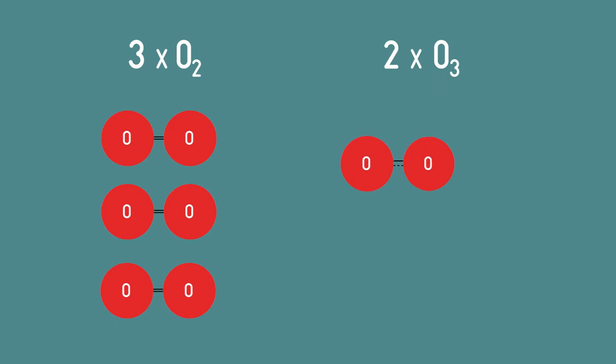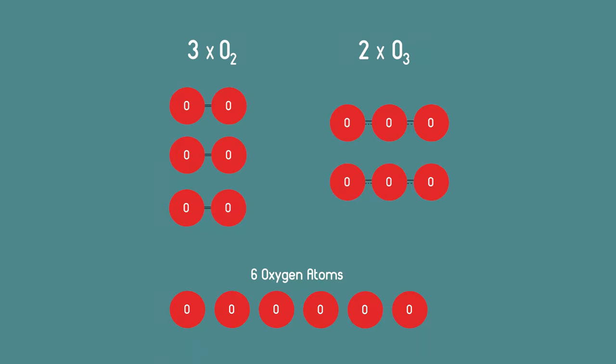So here there are six oxygen atoms, and here and here. But these are three different ways of arranging the atoms.